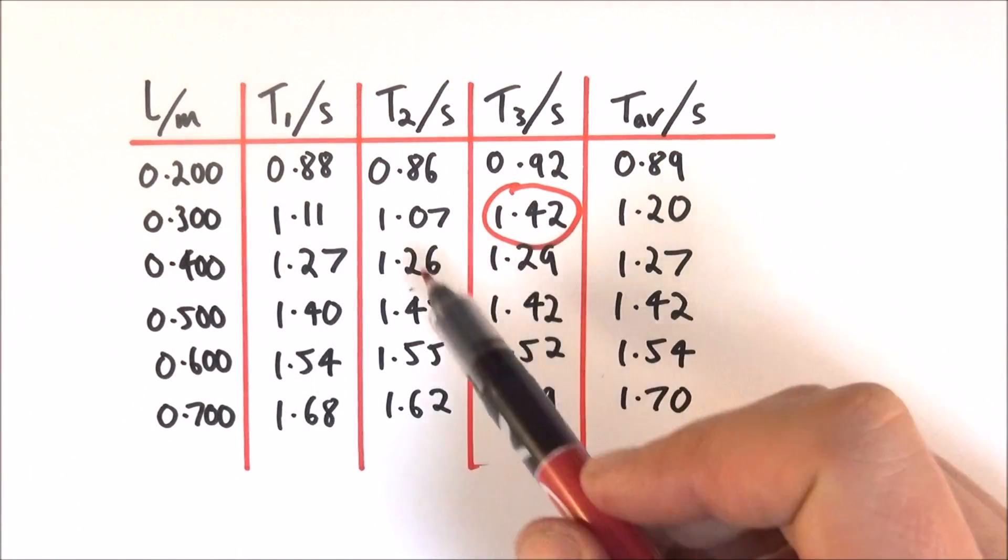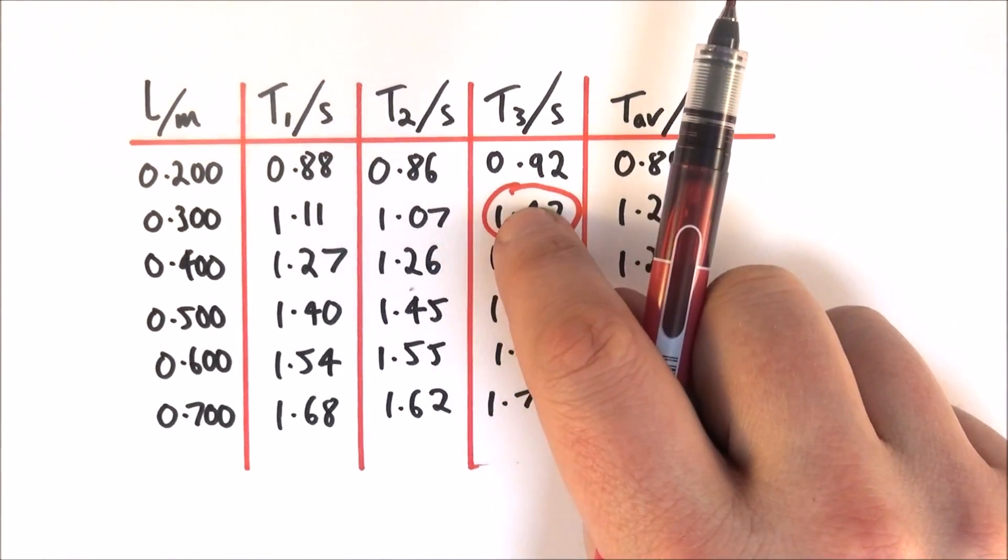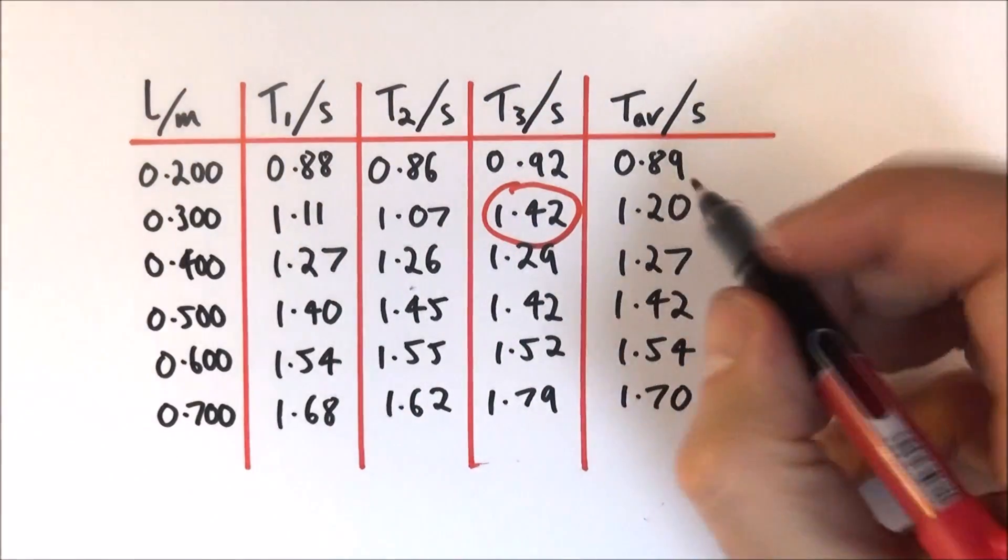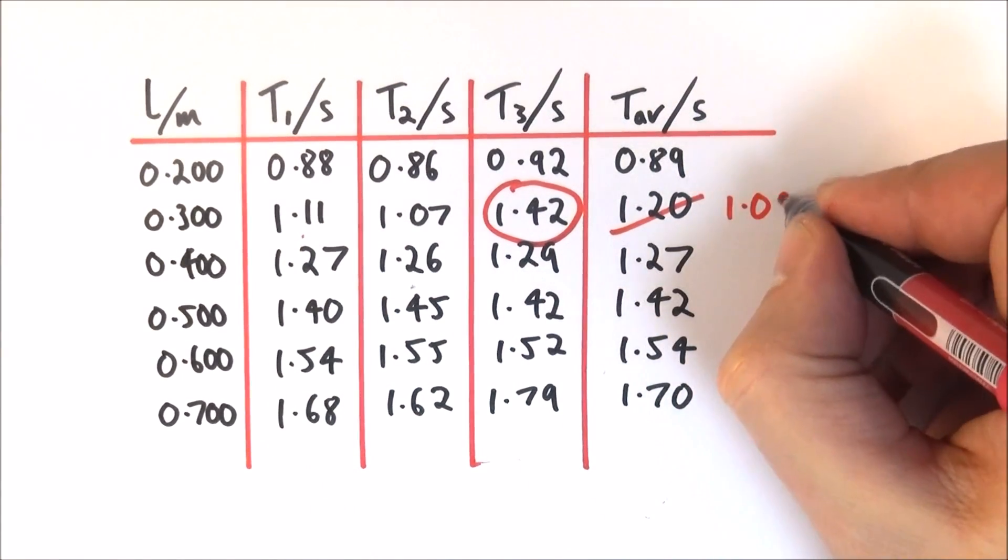You spot an anomaly, don't just cross it out and pretend it didn't happen. What you can do is you can cross it out and ignore it from your calculations, so it might be that you just work out the average of these two numbers, which might be 1.09 seconds.